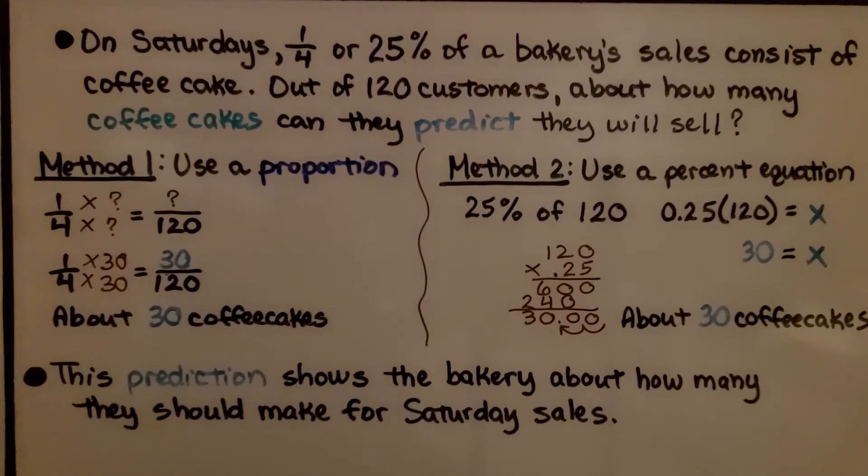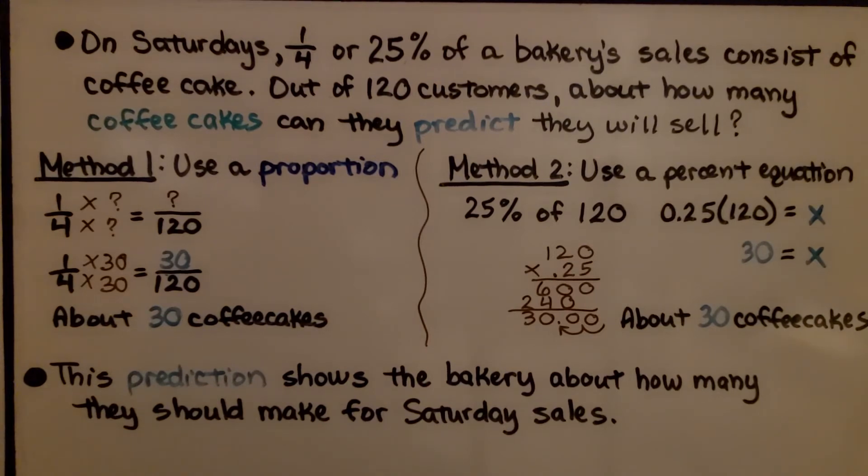On Saturdays, 1/4 or 25% of a bakery's sales consist of coffee cake. Out of 120 customers, about how many coffee cakes can they predict they will sell? So method one, using a proportion.